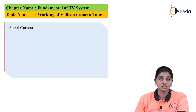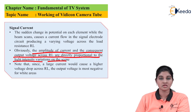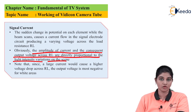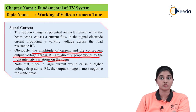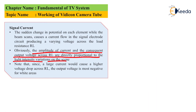Regarding signal current: the change in potential of each element results in current variation across the load resistance RL. The amplitude of the current and the consequent voltage across RL are directly proportional to the light intensity. Depending on the light intensity, the resistance changes, which affects the current and therefore the voltage produced across RL. Large current causes a higher voltage drop across RL, and the output voltage is negative in white areas in most cases.